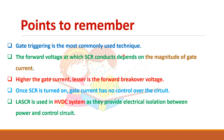The key points to remember are: gate triggering is the most commonly used and preferred technique. The voltage at which SCR conducts depends upon the magnitude of the gate current — a higher gate current causes conduction at a lower voltage. Once the anode current exceeds the latching current, you can remove the gate signal. Light-activated SCR is used in high-voltage DC systems as it provides electrical isolation between the power and control circuits.